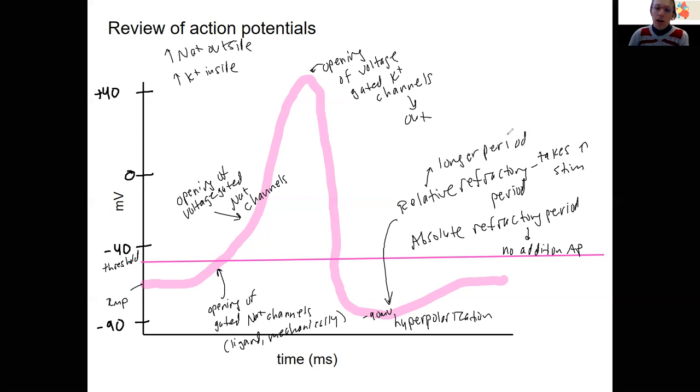These are going to be important for how our muscles work. So that's review of normal action potentials. Next, we'll look at the two different types of cardiac muscles, both the auto-rhythmic or pacemaker and the actual myocardial contractile cells.